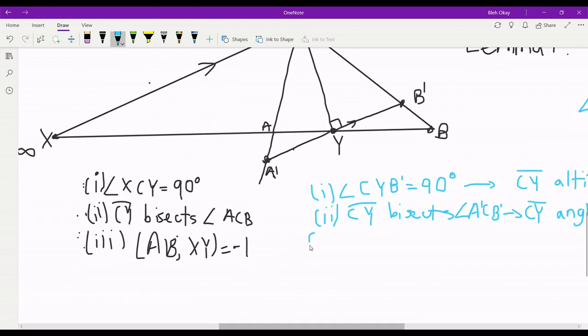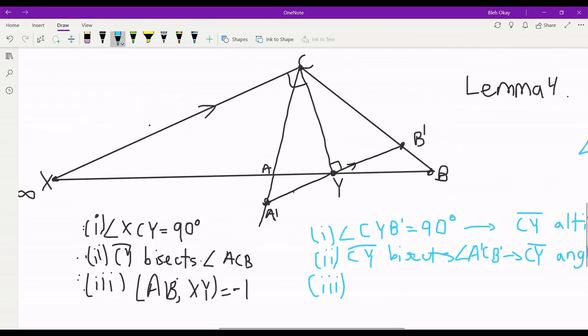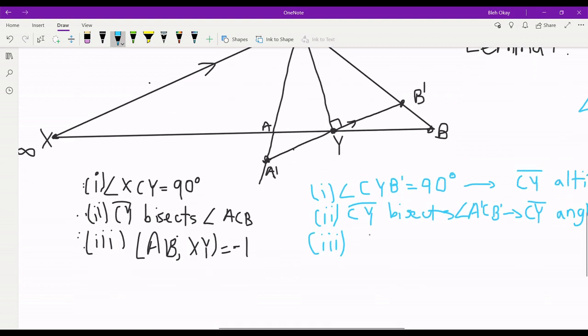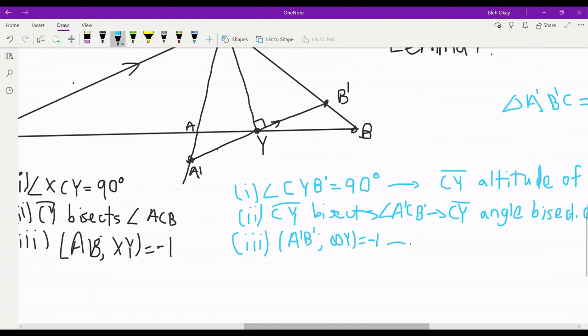Now the third condition. If we have a harmonic bundle AB, XY, well we know that since harmonic bundles are preserved under projection, we have a new harmonic bundle A prime B prime cross infinity Y. Now by Lemma 1 from the previous video, we noted that this means that Y is a midpoint of A prime B prime. And in particular, that means that CY is a median.